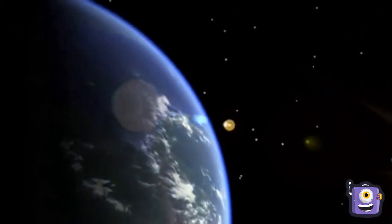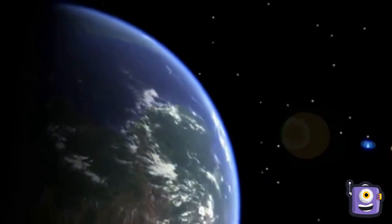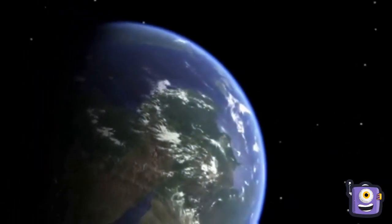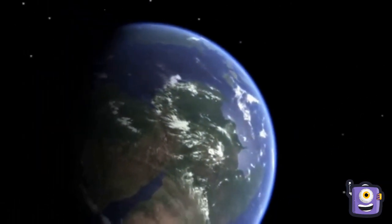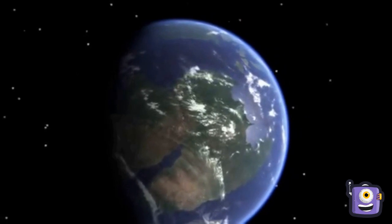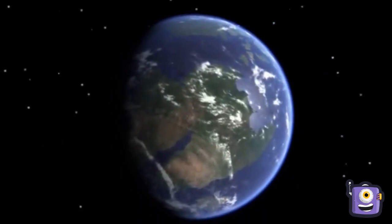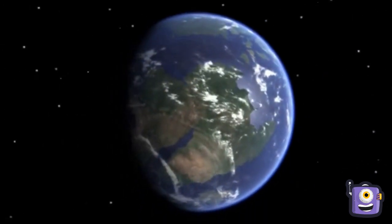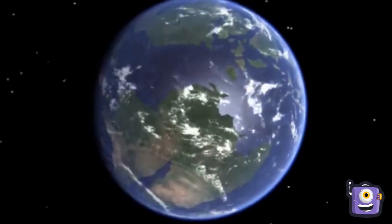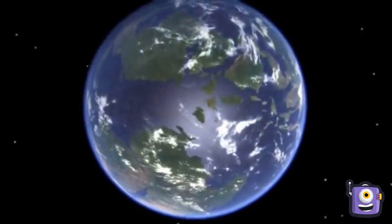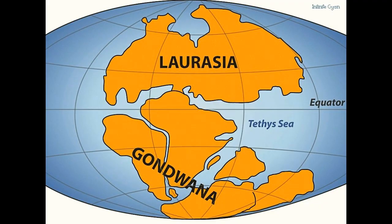Millions of years ago, all the continents of today formed a single continental mass called Pangaea, and a mega ocean called Panthalesa surrounded them. The Pangaea began to split around 200 million years ago. It first broke into two large continental masses called Gondwana and Laurasia, also known as the Angara land.